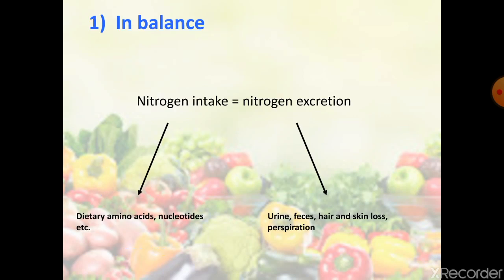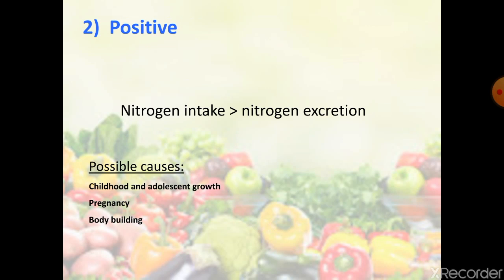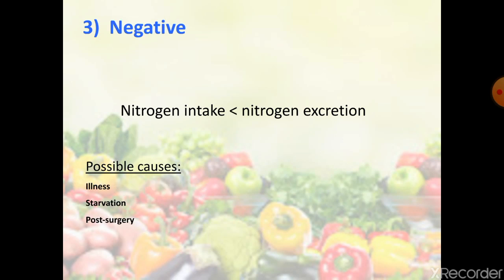Nitrogen balance status can be in three forms: in balance (intake equals excretion), positive, or negative. Positive nitrogen balance occurs when nitrogen intake is more than excretion — causes include the growth phase during childhood and adolescence, pregnancy due to growth of the fetus, and body building due to increasing muscle mass. Negative nitrogen balance, where excretion exceeds intake, is caused by illness, starvation, or related conditions.